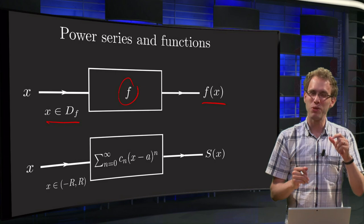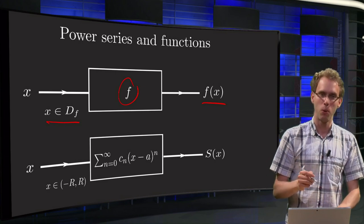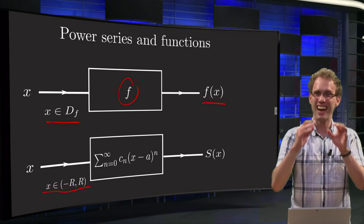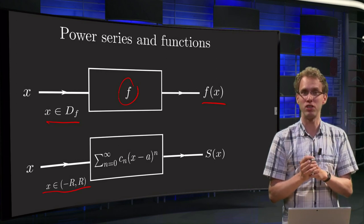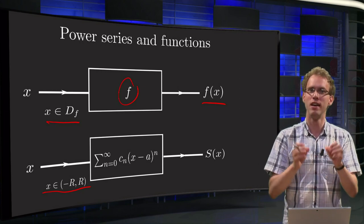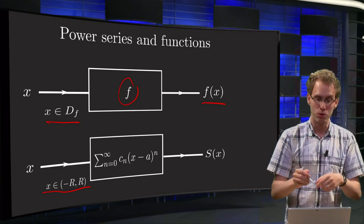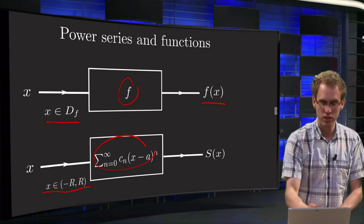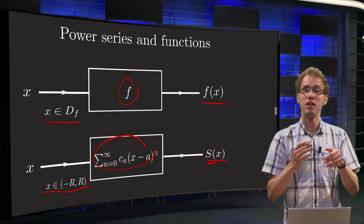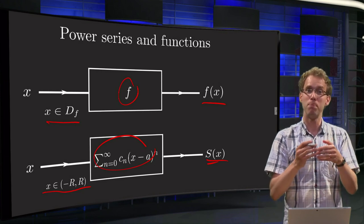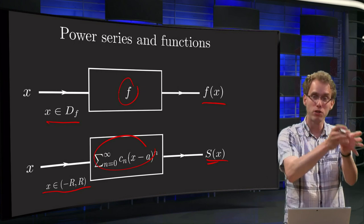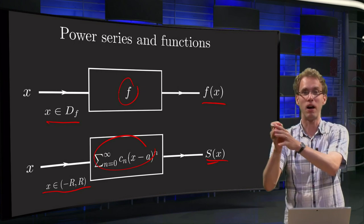Now, what is it that a power series does? Well, suppose you have some power series and an x inside the interval of convergence. I don't care about the boundary points now, you just pick your x inside your interval of convergence. You put it into your power series and it spits out a number. So what do we see? A power series does actually exactly the same job as a function does: put a number in and you get a number out.